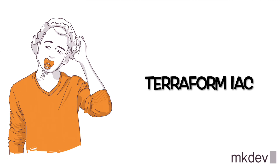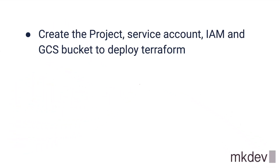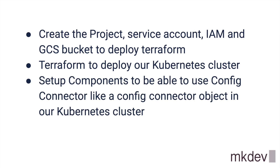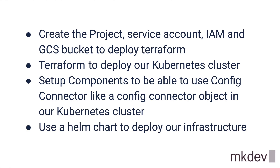So we end up with a problem. First, we create the GCP project, service account, IAM, and GCS bucket to store the Terraform state files. Later on, we use Terraform to deploy our GKE Kubernetes cluster. After that, we need to set up the components to be able to use Config Connector, like a Config Connector object in our Kubernetes cluster. And now we can use Helm chart to deploy our infrastructure.